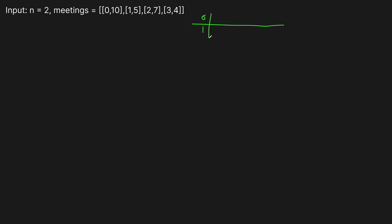Let's keep track of the count of each room - both start at zero. Our first meeting has no room assigned yet, so we give it room zero: the interval from 0 to 10 goes to meeting room zero. The second meeting, [1, 5], only has room one left, so it's assigned there. Now both rooms have a count of one. Then we get to meeting [2, 7]: both rooms are taken at time two, so we need to wait. Room one finishes first at time five, so the [2,7] meeting starts then and runs from five to ten, assigned to room one.